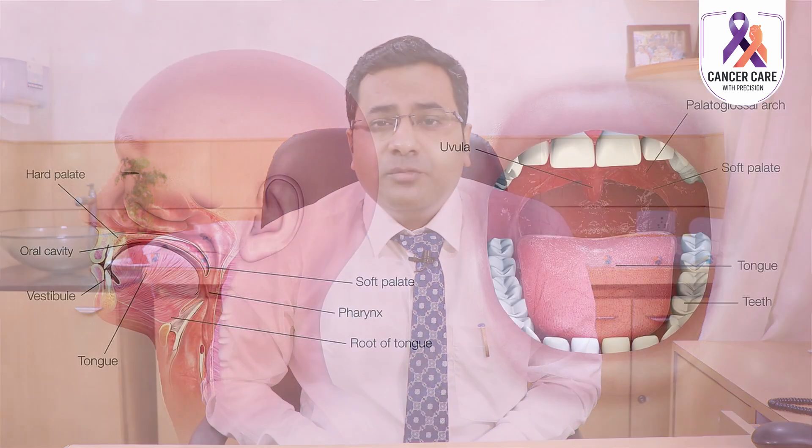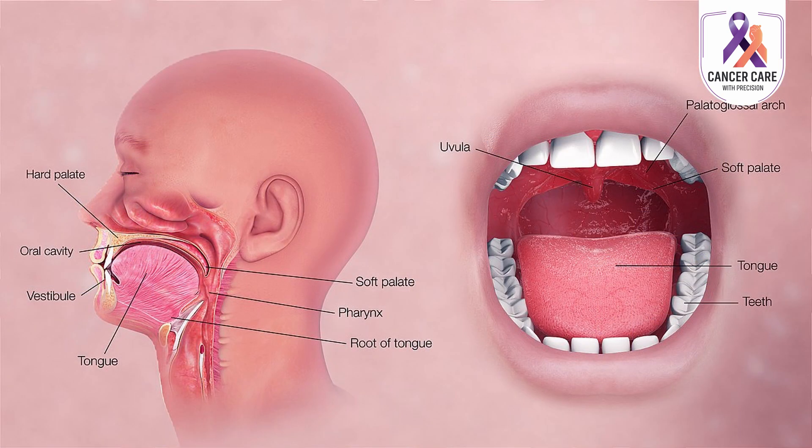It consists of mainly four parts. Number one: floor of mouth. Number two: anterior two-third of the tongue. Number three: buccal mucosa. And number four: lips.